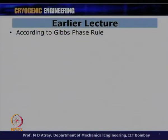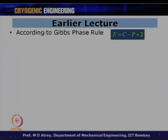Welcome to the 21st lecture on cryogenic engineering under the NPTEL program. To give a brief of what we did in the last lecture, I will summarize some points and then we will go to the topic of gas separation. Last time we studied the Gibbs phase rule, which is given as F = C - P + 2, where F is degrees of freedom, C is the number of components, and P is the number of phases.